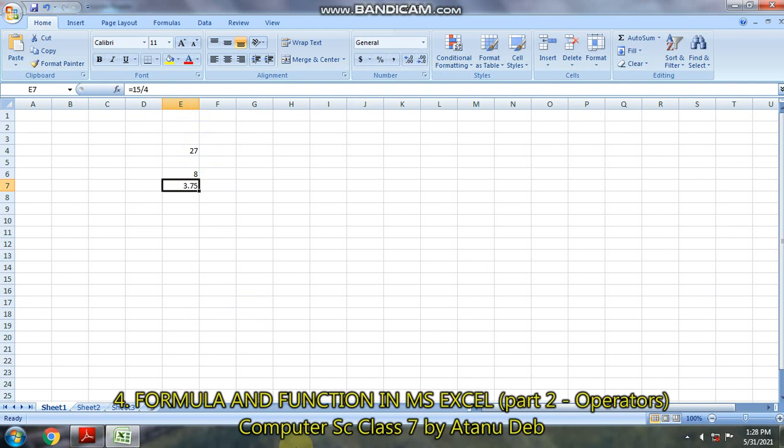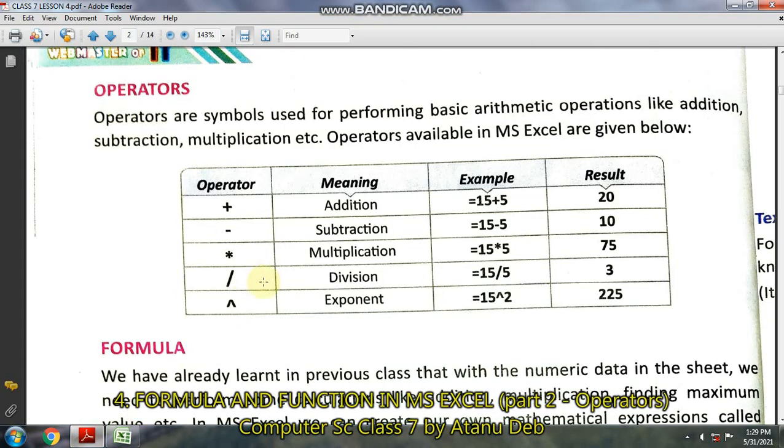That is division. And for multiplication it is very simple. Suppose 5, then you have to press the star key on the right side of the keyboard, that is on the numeric keypad, and then 3. So 5 times 3 is 15, so 15 appears. So this is the use of operators, how you use operators.